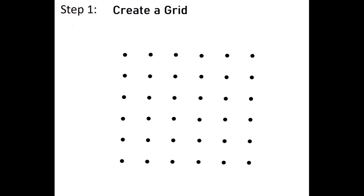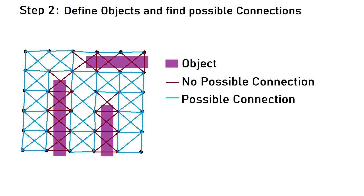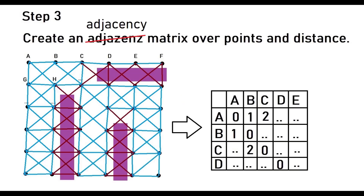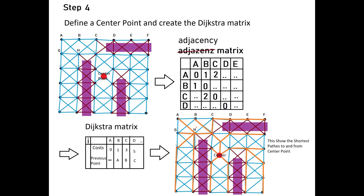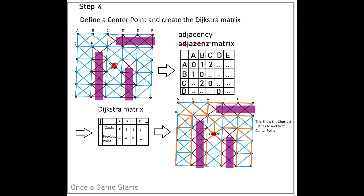Step 1: Create a Grid. Step 2: Define Objects and Possible Connections. Step 3: Create an Adjacency Matrix over Points and Distance. Step 4: Define a Center Point and Create the Dijkstra Matrix from the Adjacency Matrix. These mathematical operations happen once when the game starts.